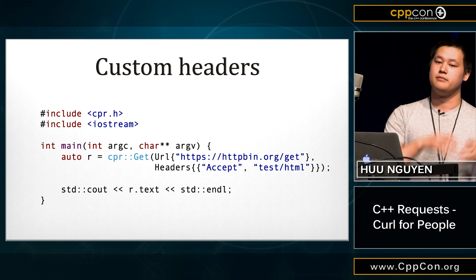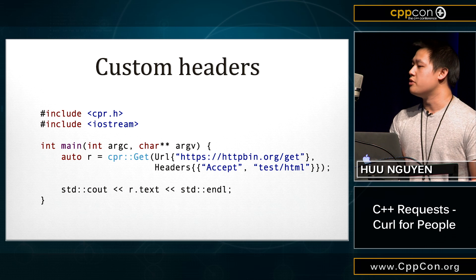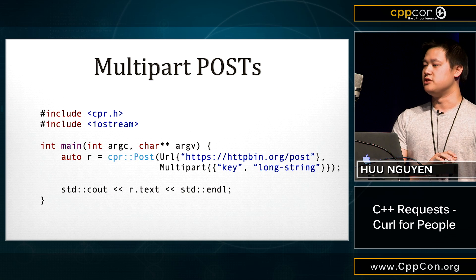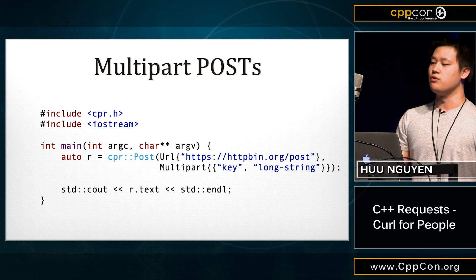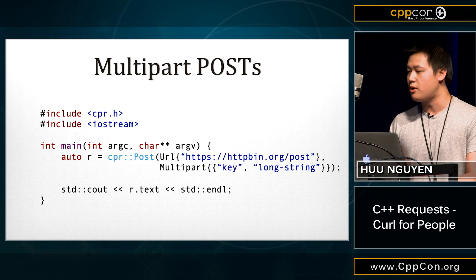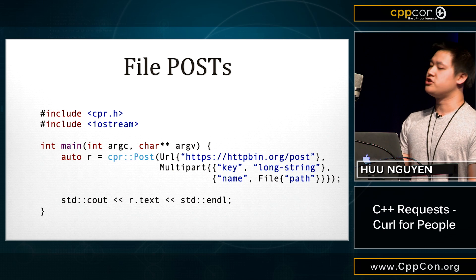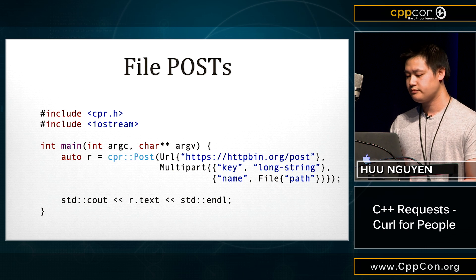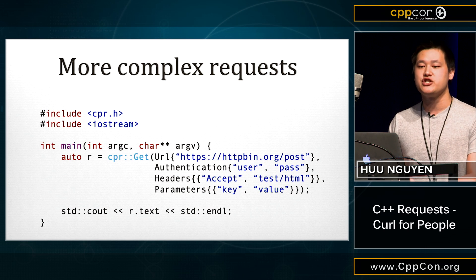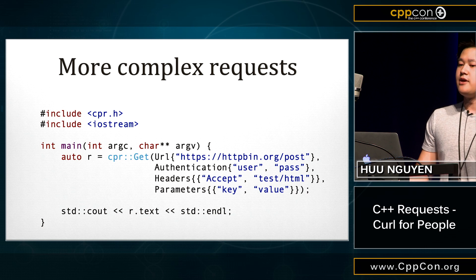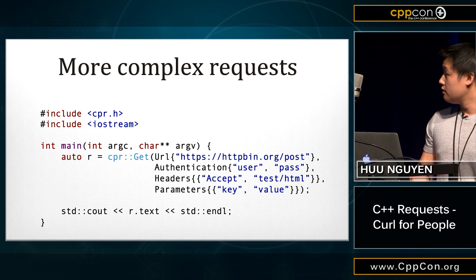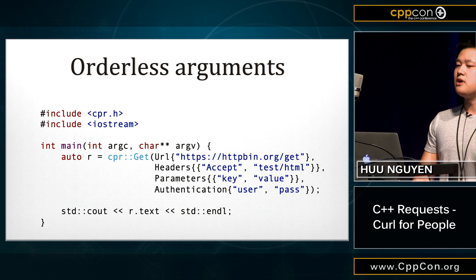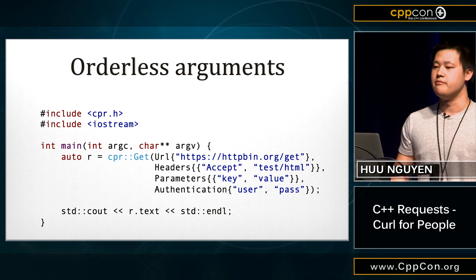We can do the same thing with posts — these are URL-encoded posts, so they get attached to the end of the URL. If you have a longer post, you call it a multipart post, and it would use a multipart form post to send the request. Adding a file should be easy as well — you instantiate a file object, give it a path and a name, and it reads and sends it behind the scenes. You can send more complex requests by mixing and matching these parameters — just throw them into the request verb and the objects settle themselves. With some template magic, we get orderless arguments basically for free, so all of these make the same exact request regardless of argument order.